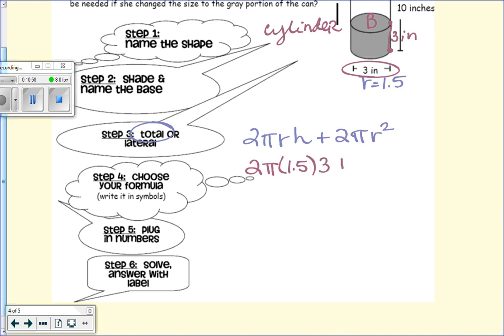Two times π, our radius was one and a half. Our height is three inches, because we just want the gray portion, plus your two bases, 2π radius of one and a half squared. So let's go ahead and do the lateral area. Let's see what we did first. So two times three is six.